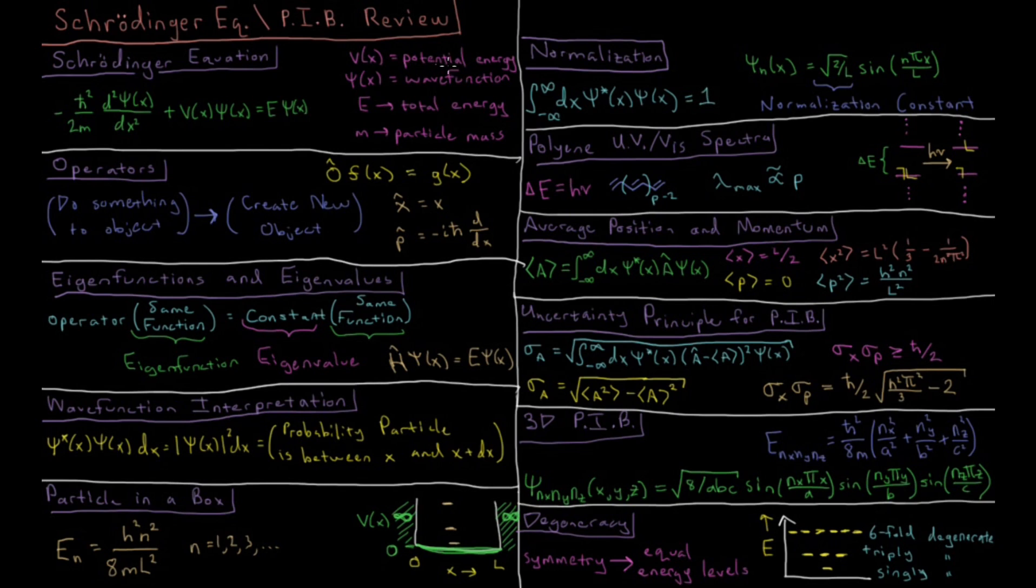If we specify a given potential energy and a given domain, like minus infinity to infinity in x, then we have specified all we need to be able to solve the Schrödinger equation.